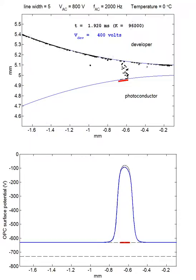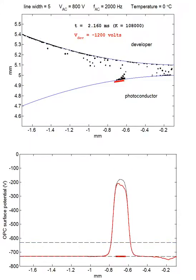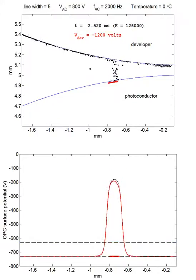Time T in milliseconds and its corresponding iteration index K are shown above the voltage difference between the two rollers.